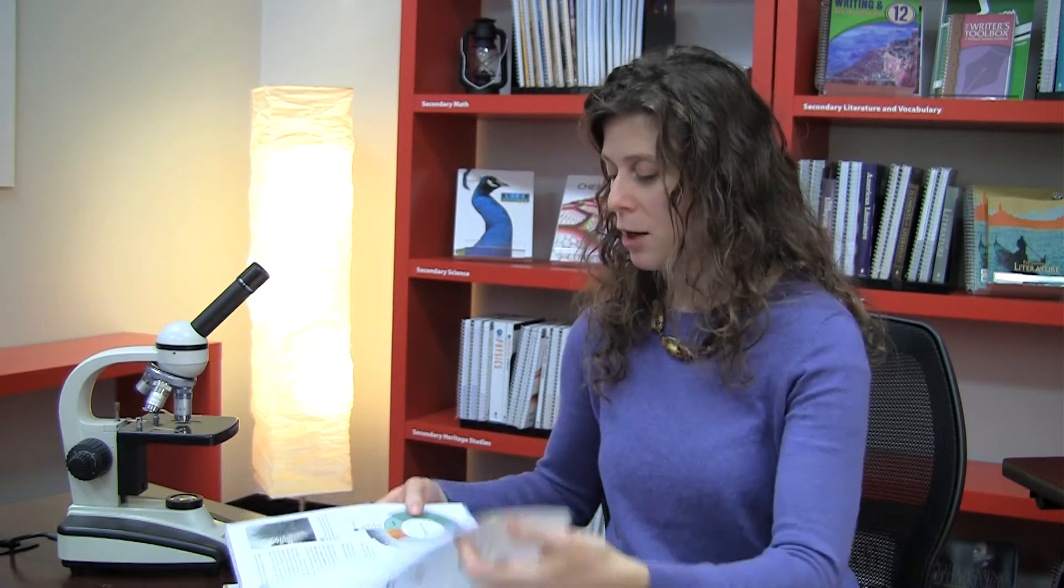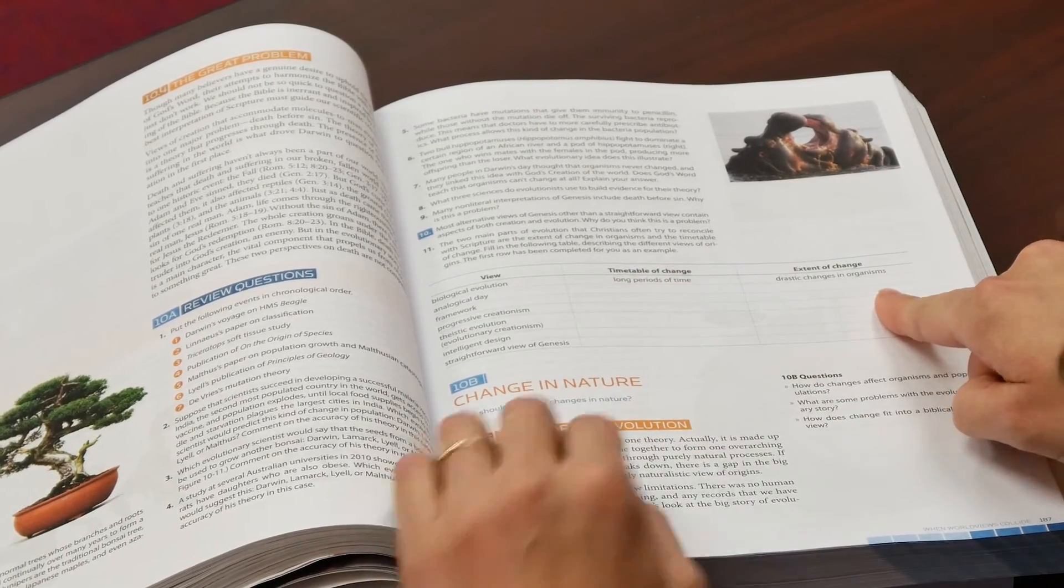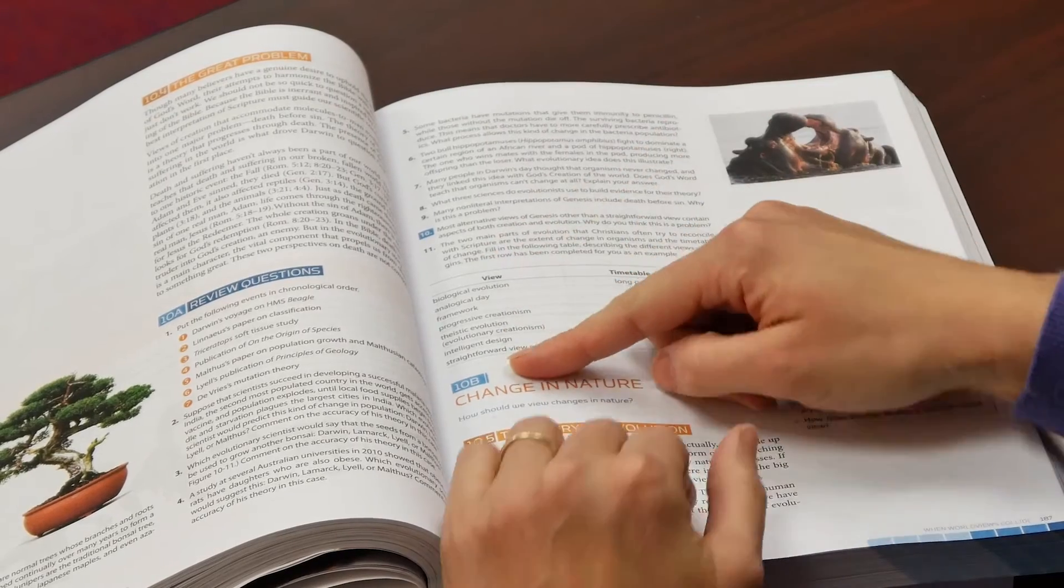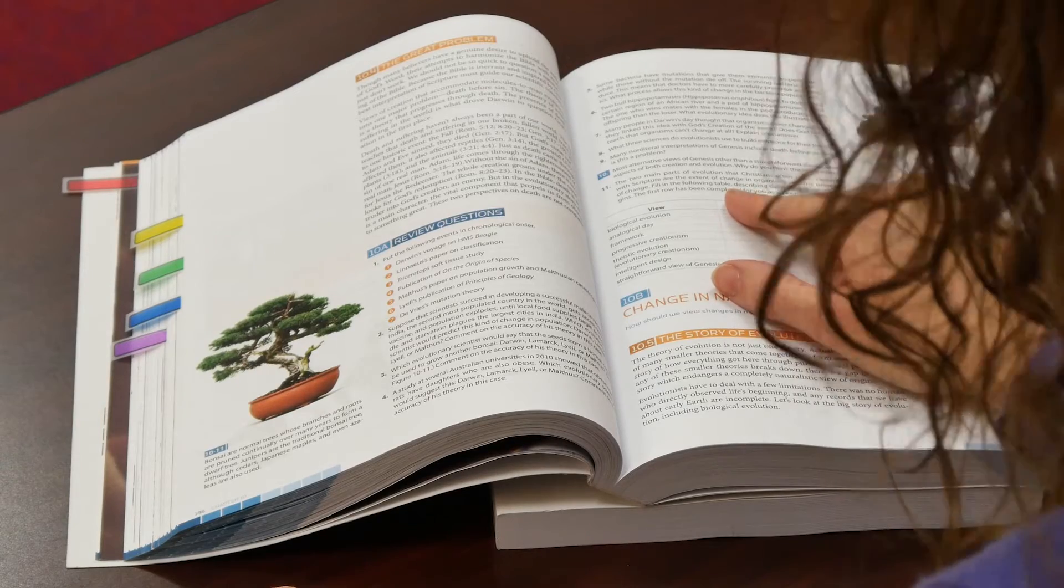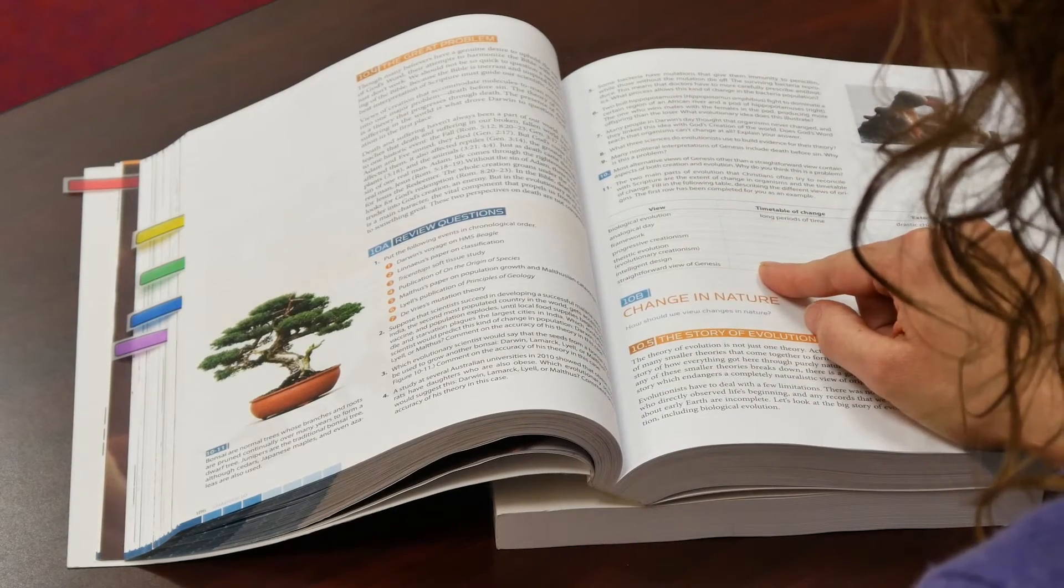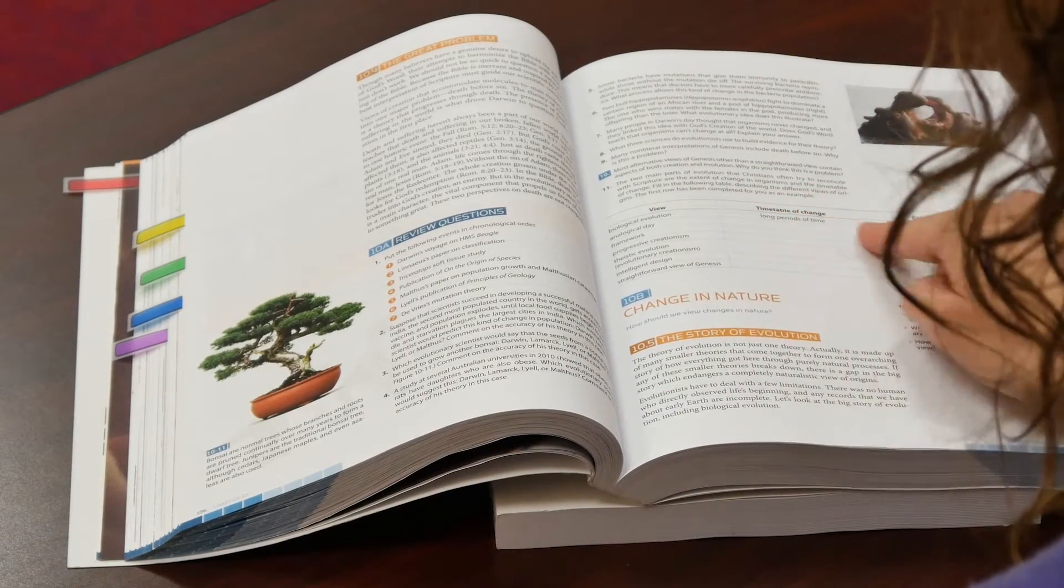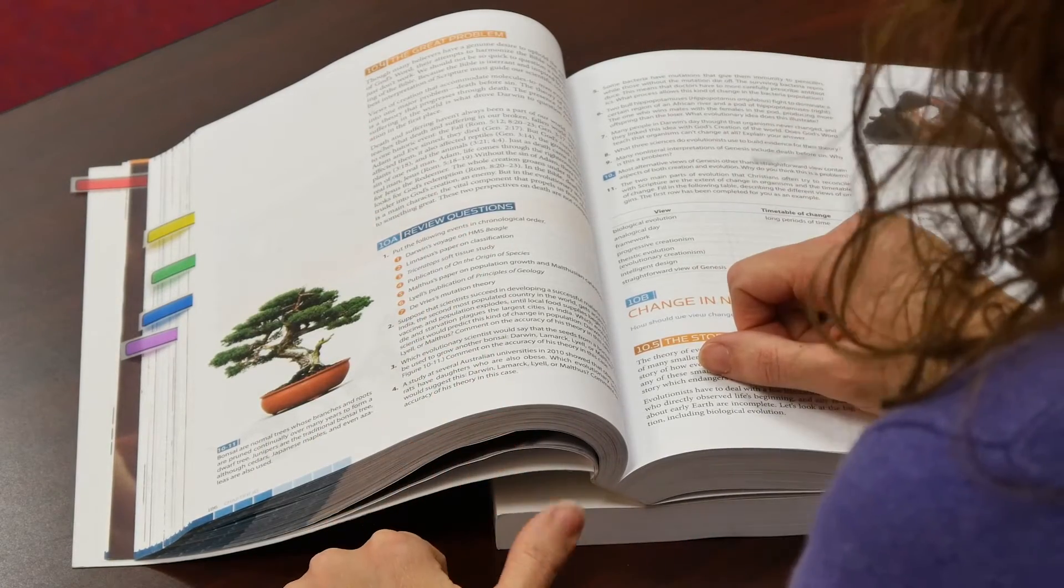We're also having students do assessments. One type of assessment is called graphic organizers. About 60% of learners are visual, so these types of questions will help students to really be able to organize information visually. This is an example of a graphic organizer: the question here is about the two main parts of evolution that Christians often try to reconcile with scripture—the extent of change in organisms and the timetable of change. Students fill in a table describing different views of origins, with the first row completed as an example.